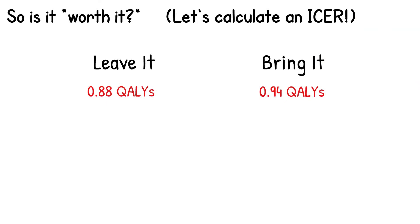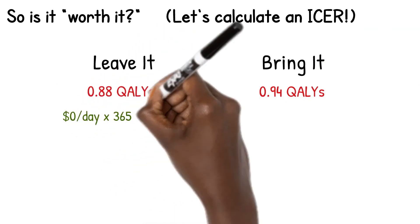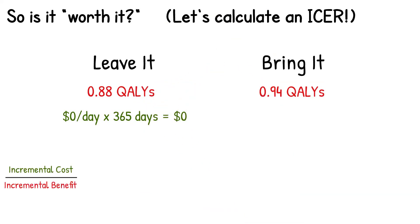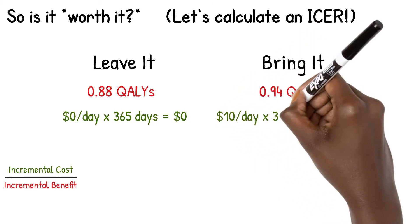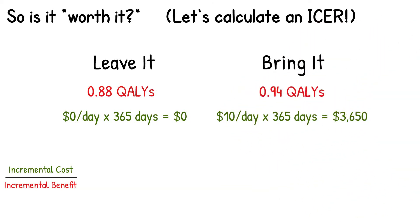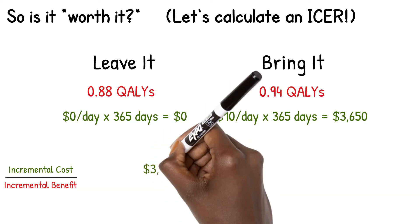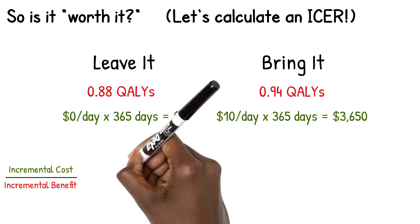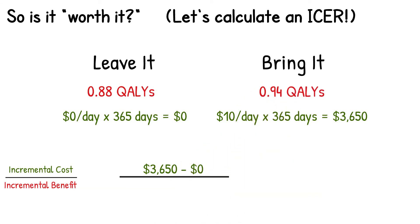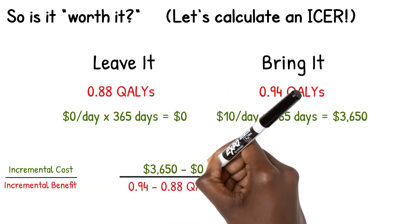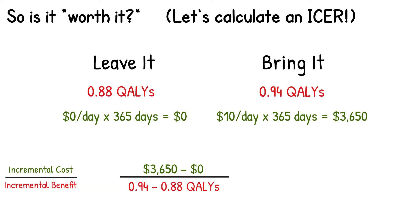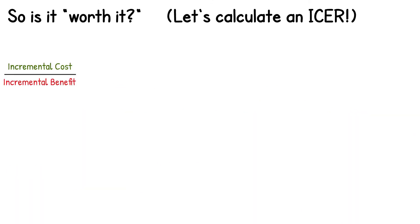So now let's add cost in. Well, leaving it is free all year long. But for the bringing it arm, this would cost you $10. But remember, we're rerunning this scenario every day. So that's $10 for the whole year. And that's $3,650 for the whole year. Next, we'll calculate the incremental cost being paid, in this case, $3,650 minus $0. And divide it by the incremental benefit being gained over that same year, 0.94 minus 0.88 QALYs in this case. And off the top of my head, that is $60,833 that we're paying per QALY gained. In this value, calculating the incremental cost divided by the incremental effectiveness gained has a very special term in economics called the ICER, or incremental cost effectiveness ratio.